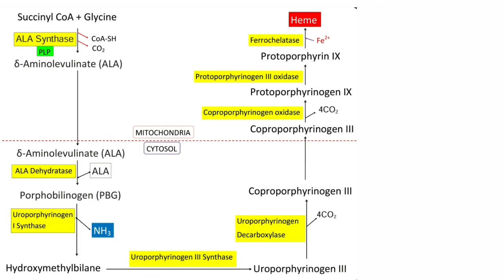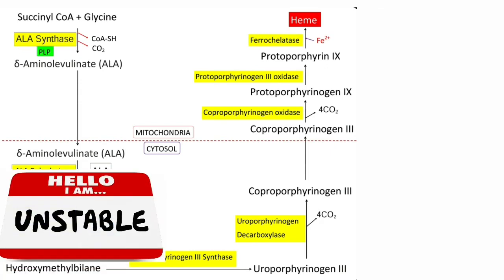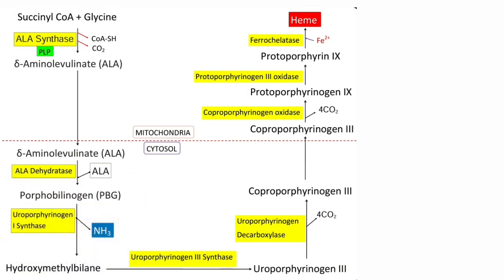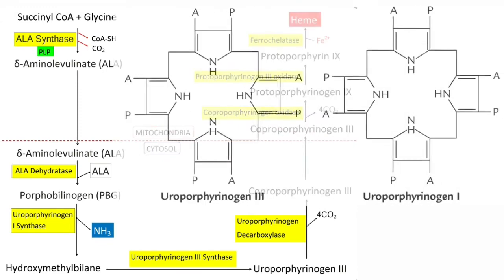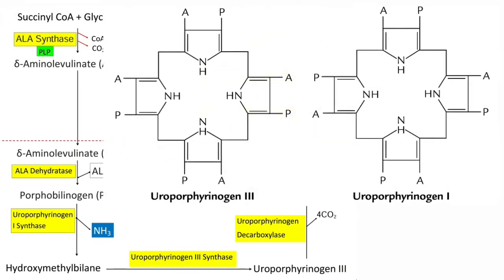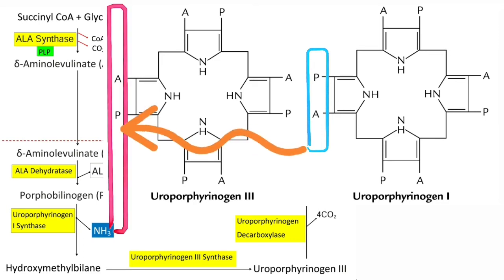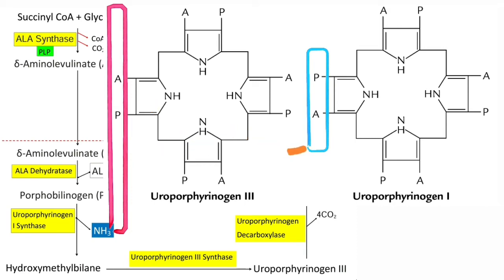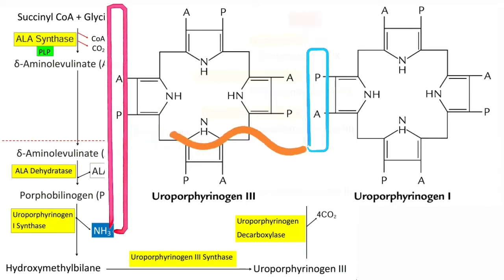During deamination, four molecules of ammonia are removed. Hydroxymethylbilane is a very unstable intermediate and undergoes spontaneous cyclization to form uroporphyrinogen-1. Uroporphyrinogen-3-cosynthase rearranges the orientation of propionate and acetate side chains on one of the pyrrole rings — ring number 4. Due to this rearrangement, it produces the asymmetric physiological type-3 isomer, uroporphyrinogen-3. Porphyrinogens are colorless but are readily oxidized to porphyrins, which are colored compounds.